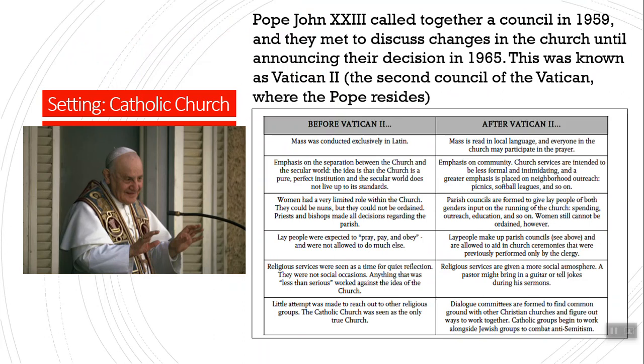Father Flynn, in many ways, represents the church after Vatican II — he is for progress and reaching out. He mentions wanting Frosty the Snowman in the Christmas pageant, where before they only did hymns. He wants to take kids on camping trips, take them out for ice cream, do fun things. Those are changes that really came in 1965. Sister Aloysius represents the old way of thinking in the church — follow the rules. As it says: pray, pay, and obey. Give your money, obey the rules of the church, and sit there and be quiet.